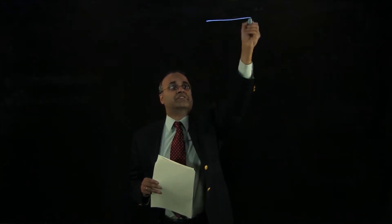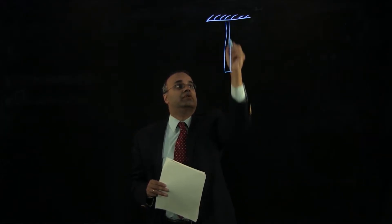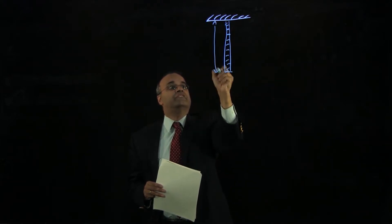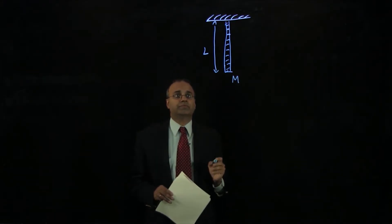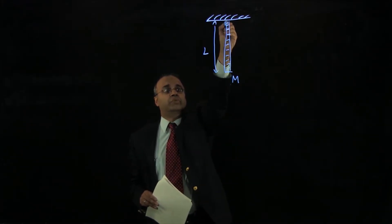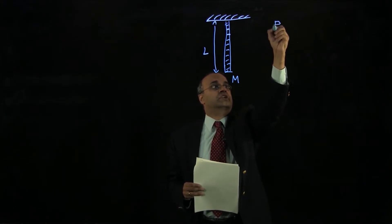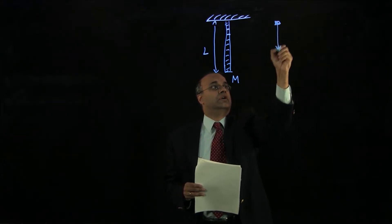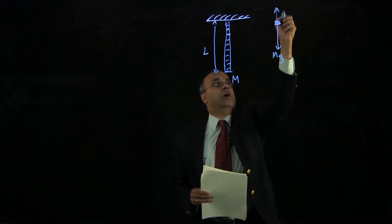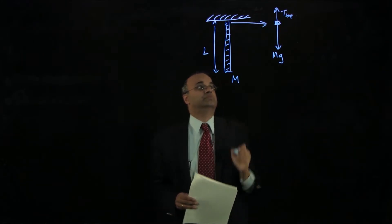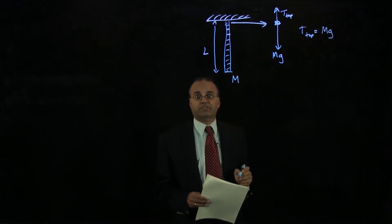We can see that by looking at this example. If we imagine we have a massive rope of length L suspended from a ceiling, it's easy to see that at the top of the rope, a little element right at the top has to support the entire weight of the rope. If I examine just a little piece at the top, the weight of the entire rope would be acting downwards, and for the rope to remain stationary, there has to be a tension upwards — T top. So at the top of the rope, the tension is just equal to mg, where m is the mass of the entire rope.